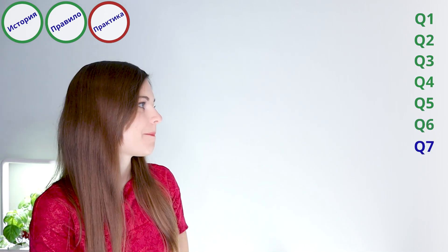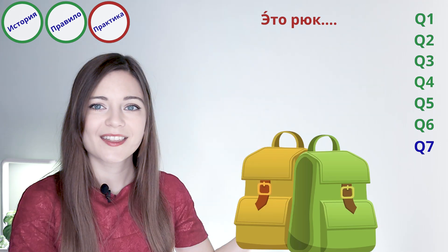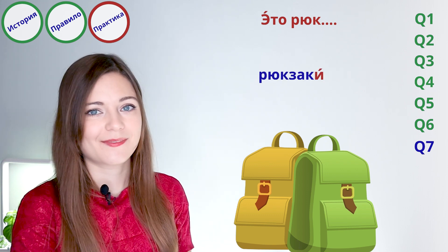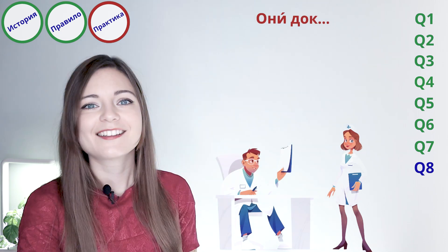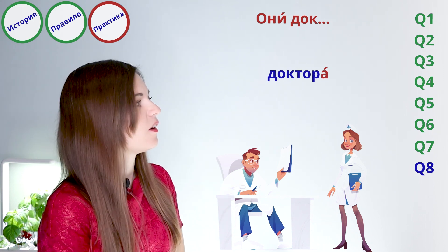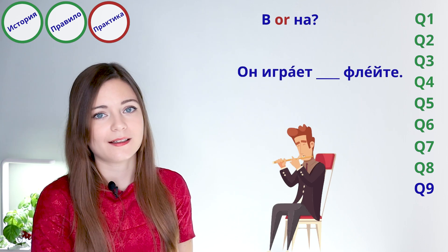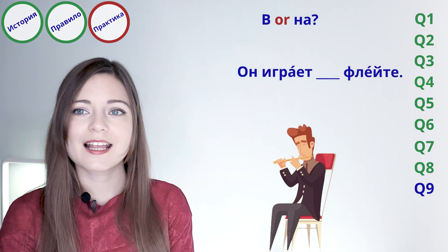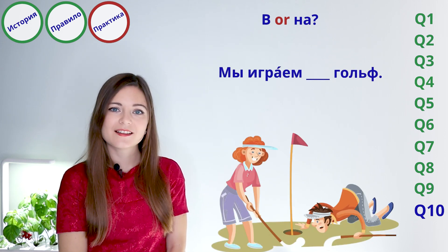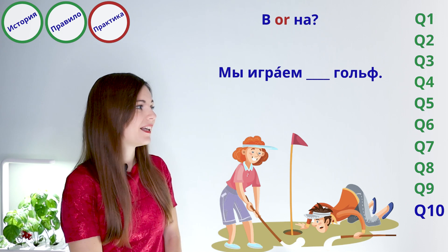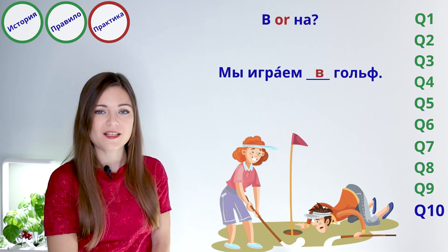Вопрос семь: доктора. Вопрос восемь — в or на? Он играет на флейте. Вопрос девять: мы играем — мы играем в гольф. It's a sport, so we use В. Very good! You have finished all of lesson number nine. Ты закончил урок девять? Поздравляю. Молодец. Увидимся на следующем уроке. I will see you at the next lesson. Пока-пока!